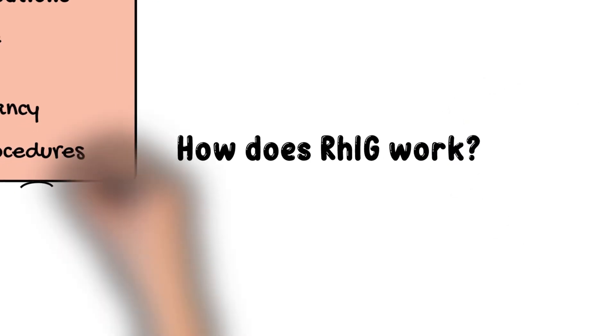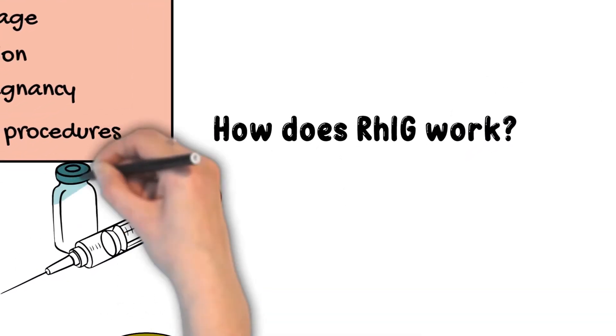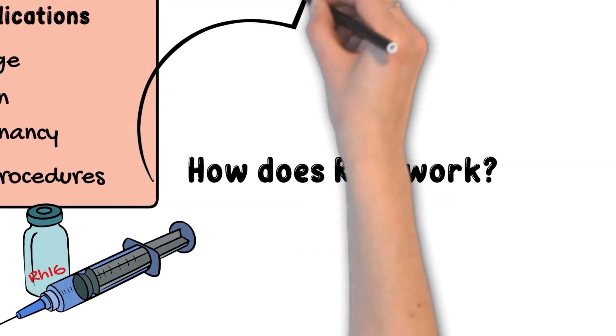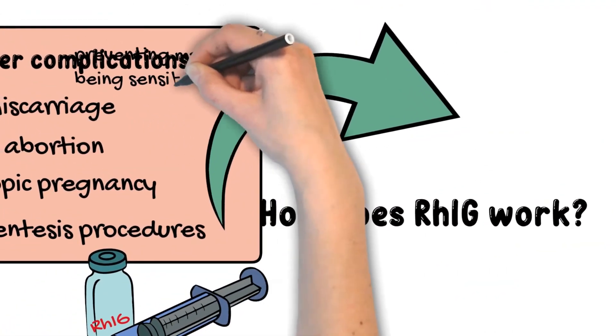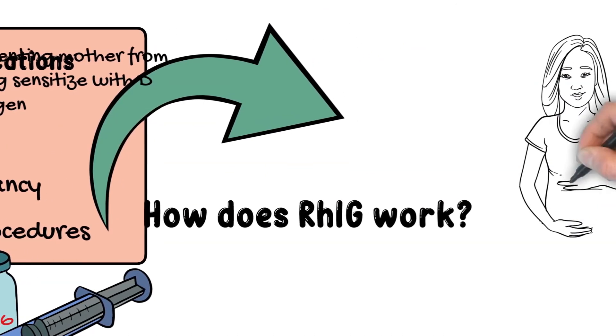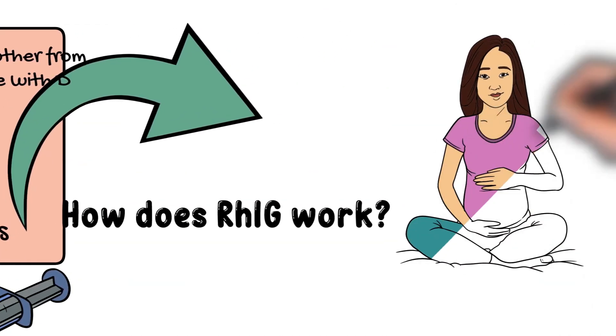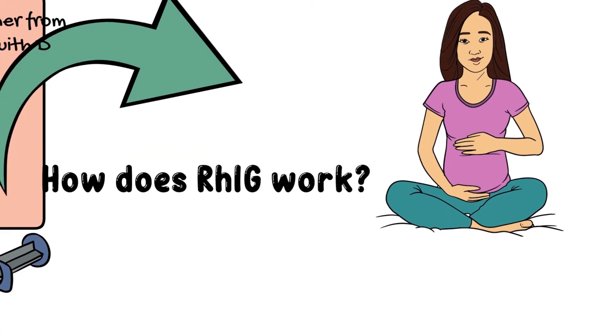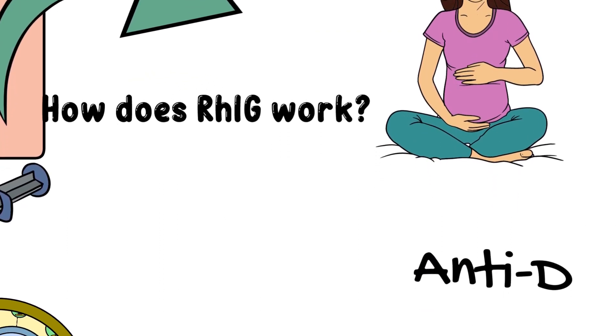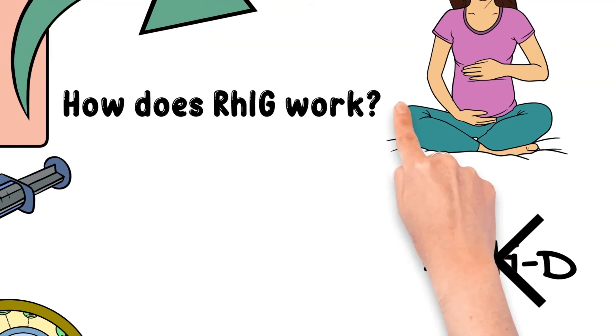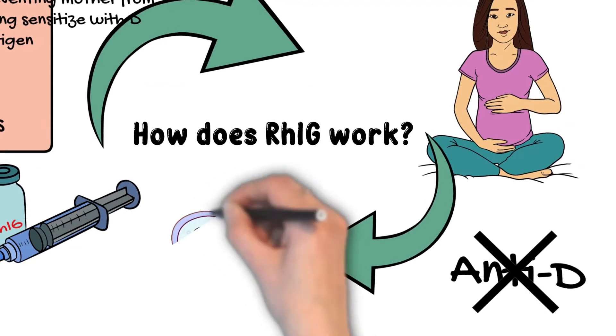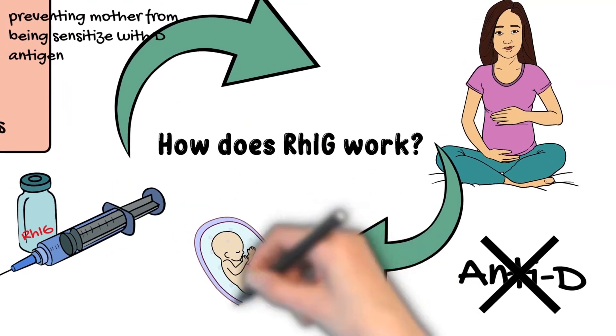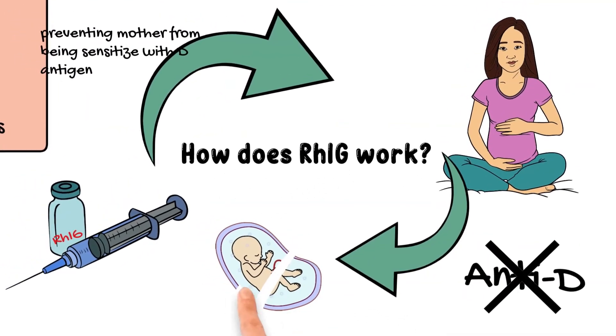How does RHIG work? RHIG works by preventing the RH negative mother from making a true anti-D antigen against her RH positive baby. Once the patient receives RHIG, the anti-D in the RHIG circulating in the mother's blood will take care of cells with the antigen before she gets sensitized and makes her own anti-D. As long as RH negative mother receives appropriate dose of RHIG during the pregnancy, she has a low risk of developing anti-D and the baby has a low risk of developing hemolytic disease of the newborn.